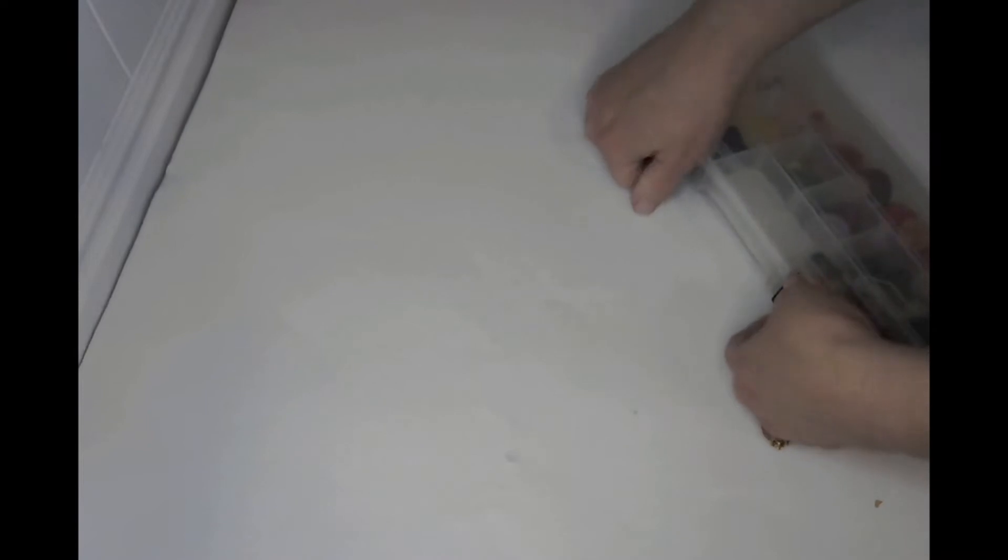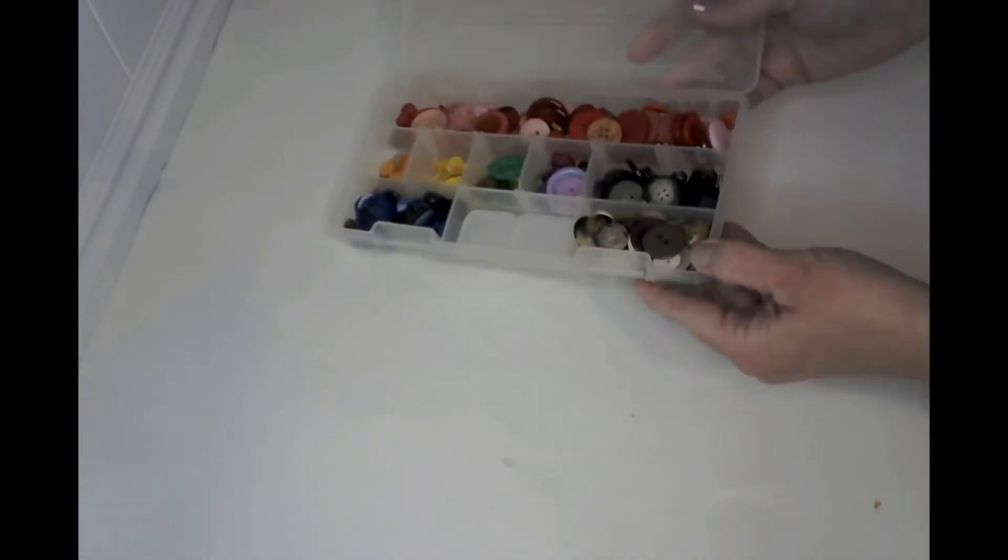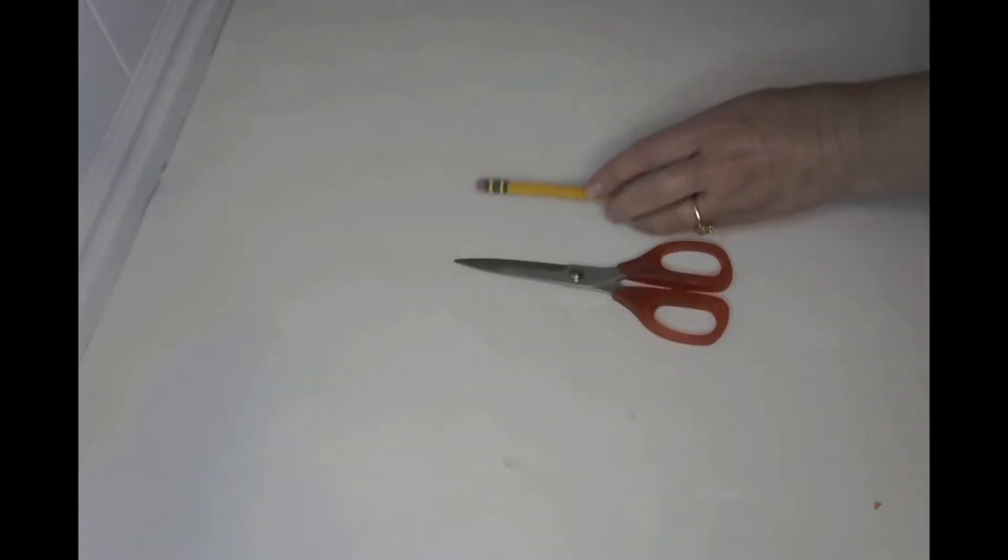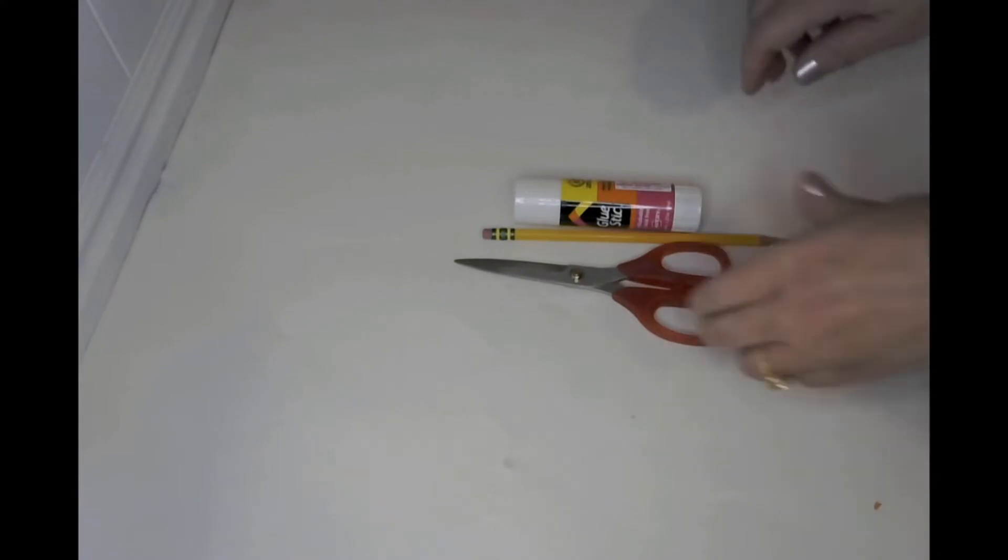Optional will be, I'm going to be using some buttons, but you can get buttons at the Dollar Tree as well. You'll also need scissors, a pencil, a glue stick, and your glue gun.